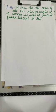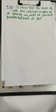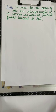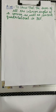Hello my dear students, today we're going to show that the sum of all the interior angles of a convex as well as concave quadrilateral is 360 degrees. The meaning of convex and concave we've already discussed in our last video.